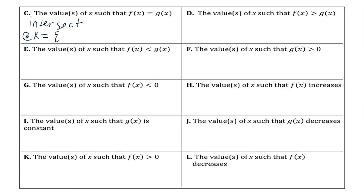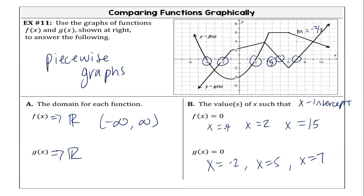Negative three. Good job. Where else do they intersect? X equals three. And x equals nine. So we intersect at x equals negative three, we intersect here at x equals positive three, and we intersect here when x equals nine.